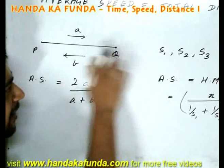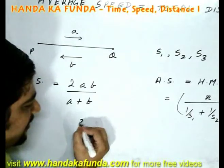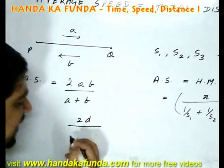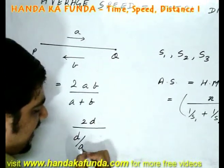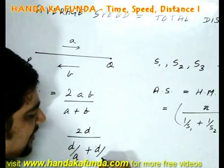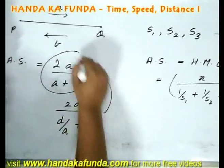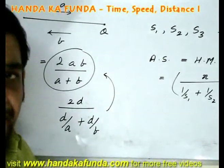It will be 2AB by A plus B. Think about it. Why? Total distance covered will be in going and coming back. You can say it is 2D. Time taken to go with the speed A is D by A and the time taken to come back is D by B. If you calculate it, it will come out as 2AB by A plus B.